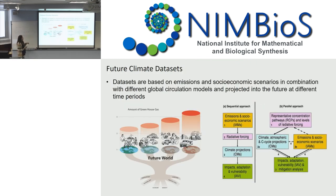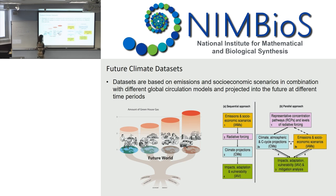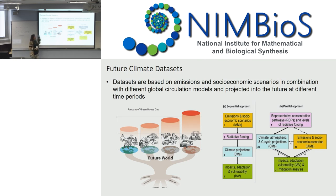For future climate data sets, basically you have emission scenarios — from the optimistic scenario where everybody rides a bike and there are no emissions, to a scenario with very high emissions. You pick one of those emission scenarios, choose a global circulation model, and then project that climate onto the future. If you're using future climate data, these are choices you'll have to make, and you need to make sure you're choosing the right things for what you're trying to study.